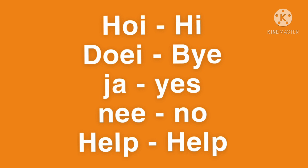Here are some basics. Hoi means hi, doei is bye, ja and nee is yes and no, and, well, help is help, obviously.